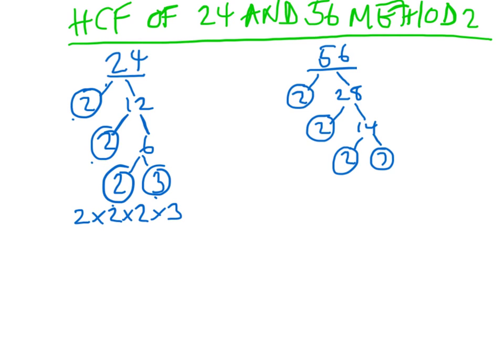I've done the same for 56 over here, and we've got 2 times 2 times 2 times 7. So I can write out 56 as the product of its prime factors: 2 times 2 times 2 times 7.